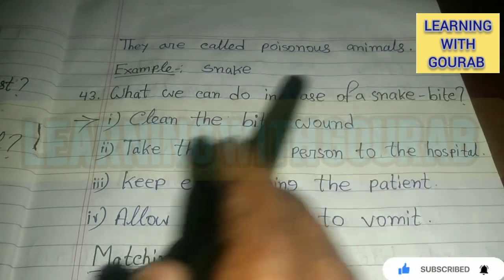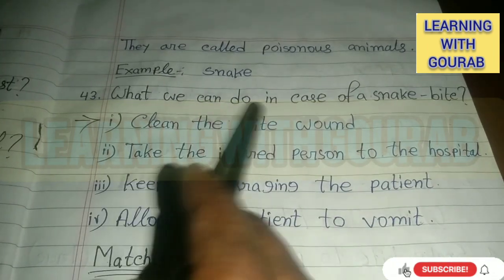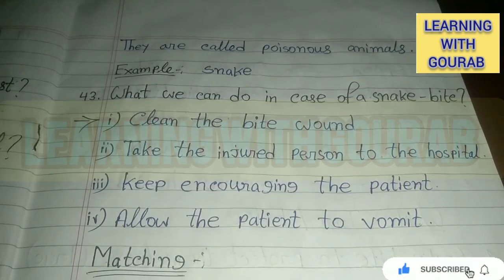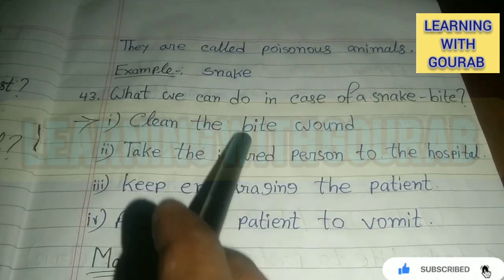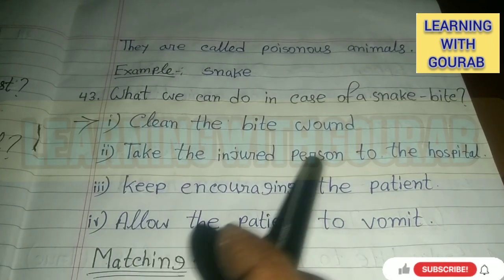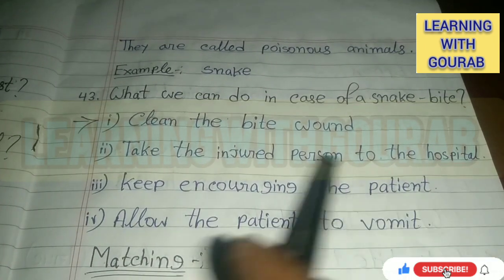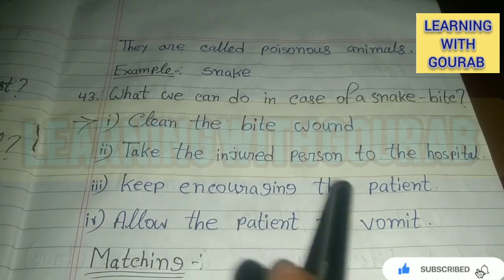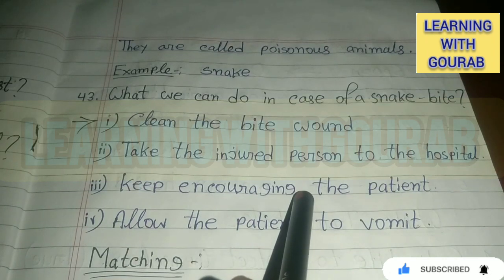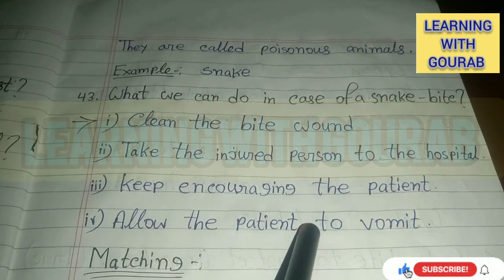What should we do in case of a snake bite? Answer: First, clean the bite wound. Then take the injured person to a hospital. Keep encouraging the patient. Allow the patient to vomit.